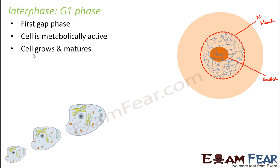The cell grows and reaches maturity. G1 is the first step of the cell cycle, and it also comes after the last step — cytokinesis — where the cytoplasm divides and daughter cells are formed. The newly formed daughter cells cannot immediately divide again; they need to grow and mature. So many metabolic activities need to take place for them to grow or mature, and these metabolic activities happen here in G1.